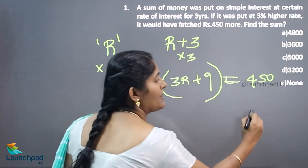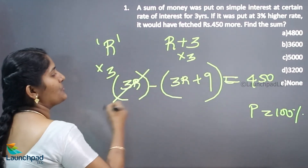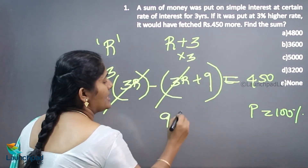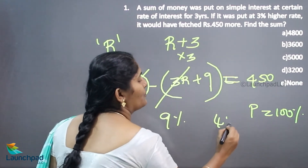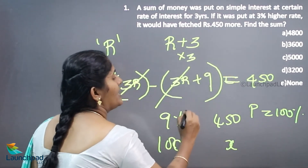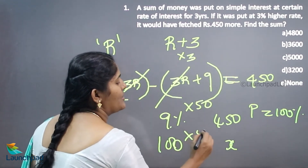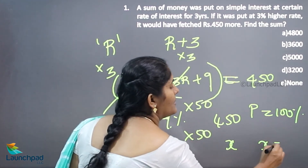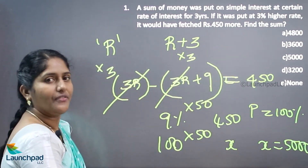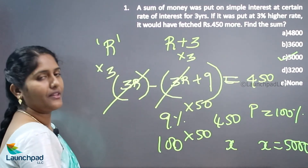We consider the principal amount as 100 percent. The 3R terms cancel, leaving 9 percent equal to 450. So 1 percent equals 50, and 100 percent equals 50 times 100, giving 5000. This is another way to get the answer. The answer is option C.